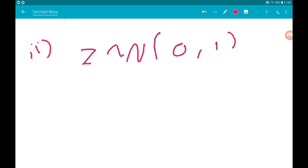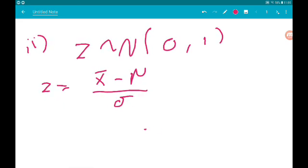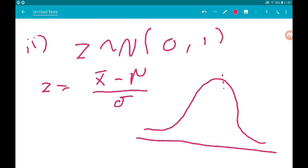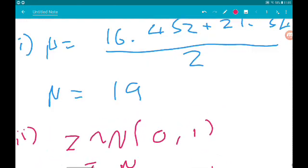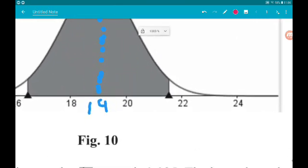So z is normally distributed with a mean 0 and variance of 1. Now z is equal to x̄ minus μ over σ. Now if we just sketched the distribution for z, it's going to look something like that.